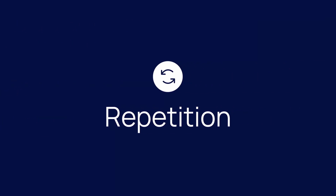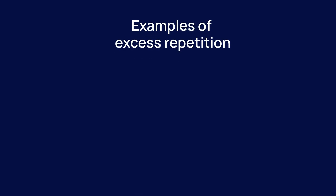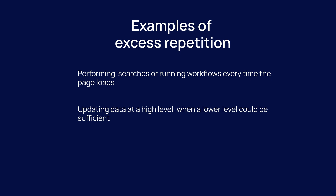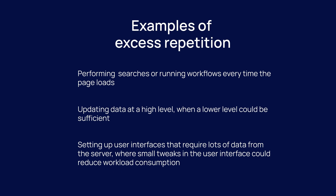And finally, we have repetition. Repetition is about how frequently a given task is being performed on the server and taking a look at where repetition is necessary. Using the car analogy, excess repetition is like taking the same trip repeatedly when fewer trips would achieve the same result. Examples that often lead to additional consumption here are performing searches or running workflows every time the page loads, updating data at a higher level when a lower level could be sufficient, and setting up user interfaces that require a lot more data from the server when small tweaks could reduce workload consumption.